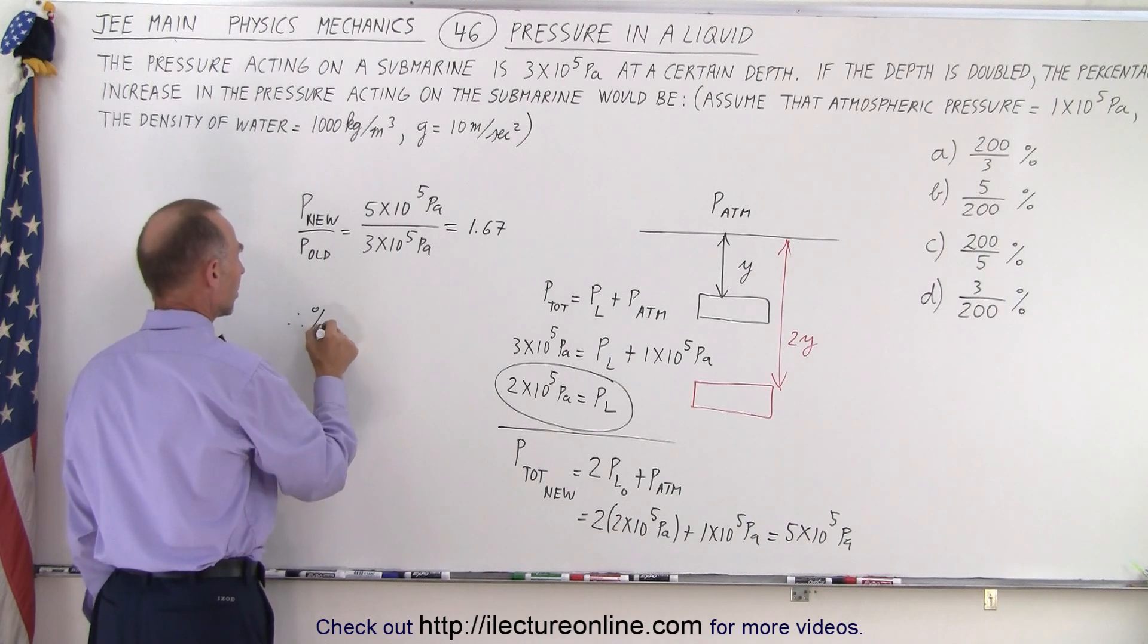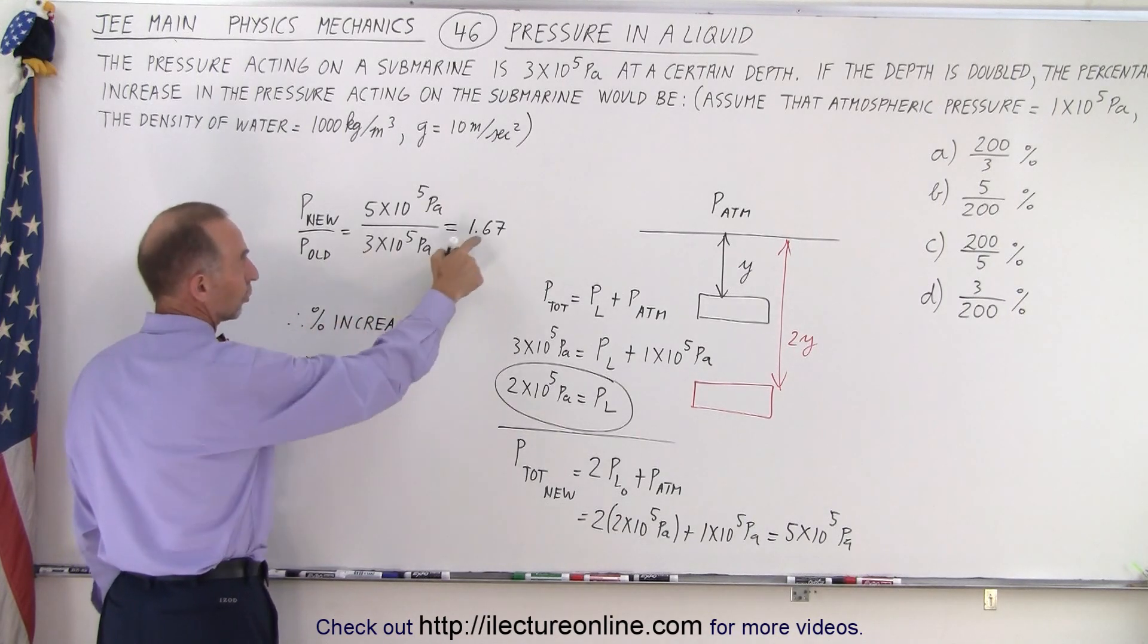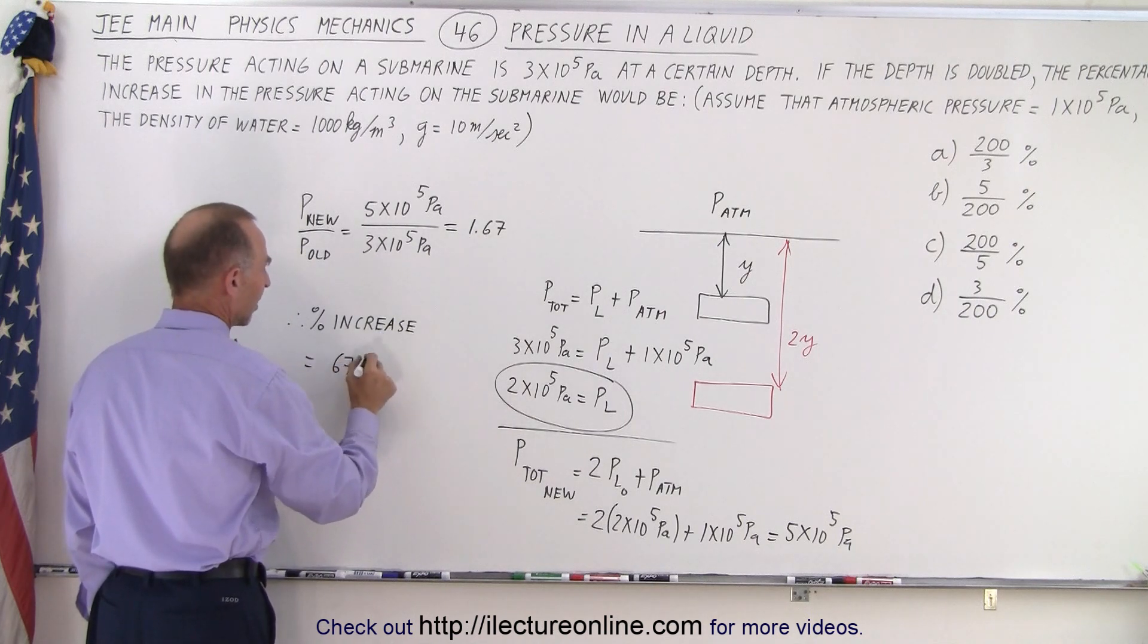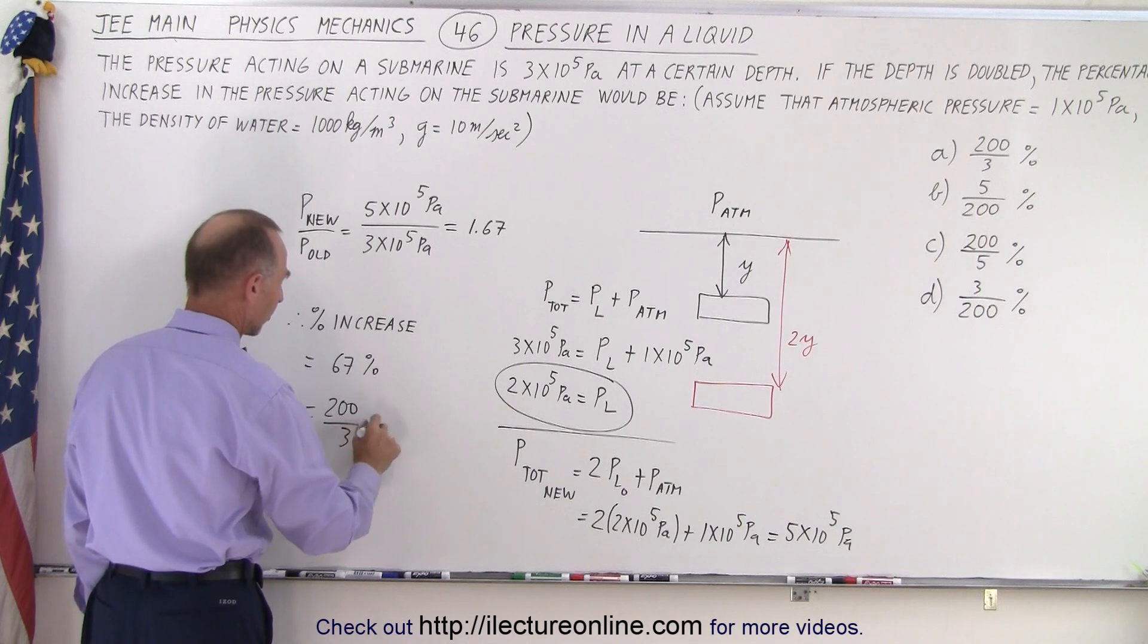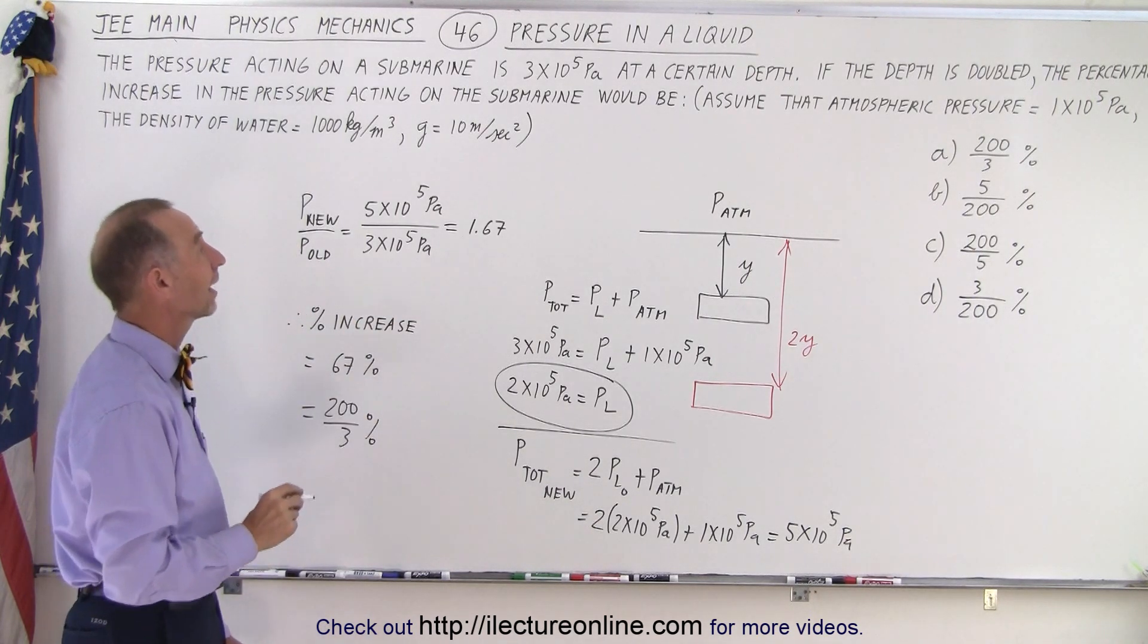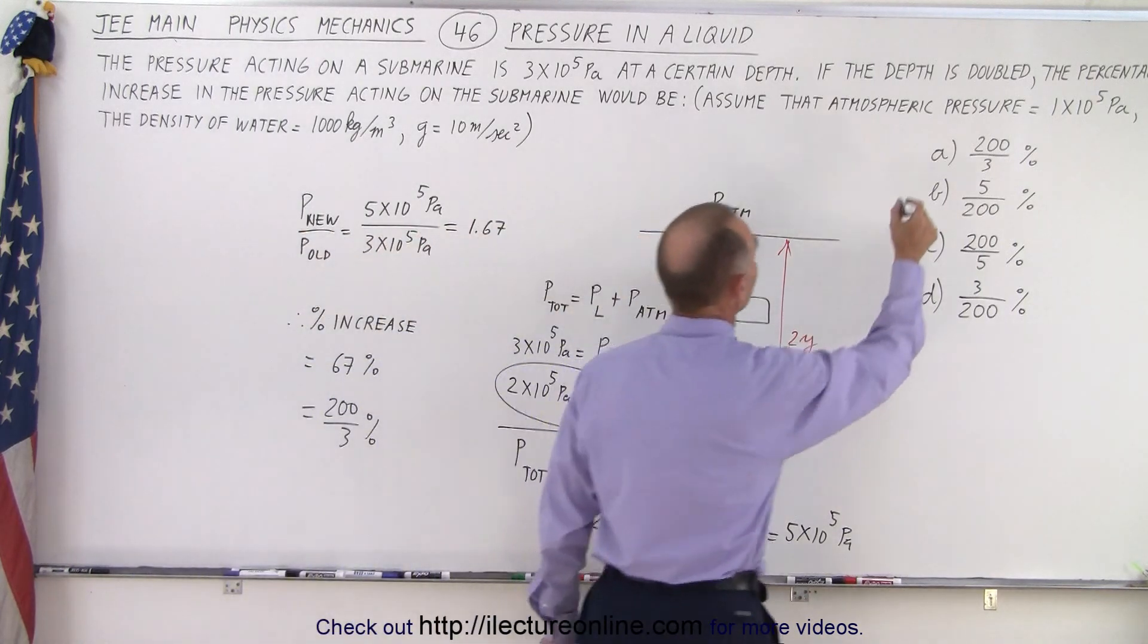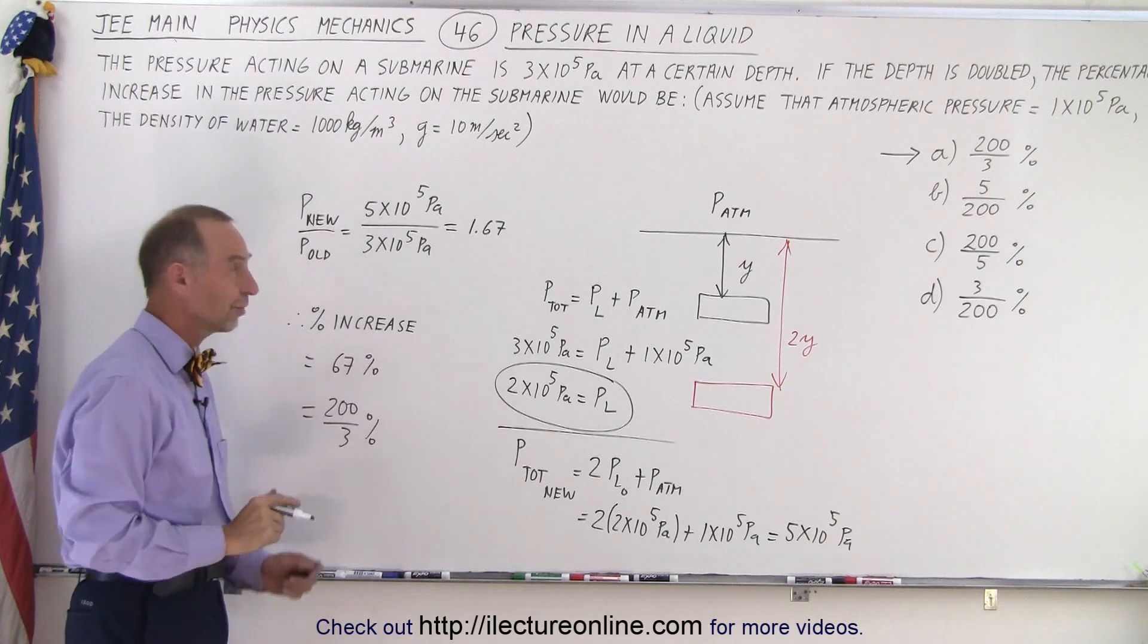Therefore the percent increase is going to be equal to 67 percent, or we can write that as 200 over 3 percent. Now when we look at the answers, it looks like answer number A is the correct answer. 200 over 3 is the same as 67 percent.